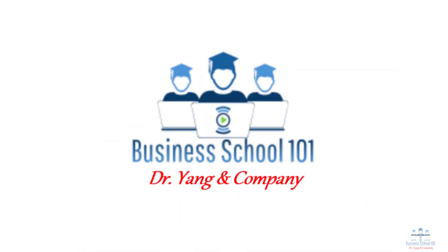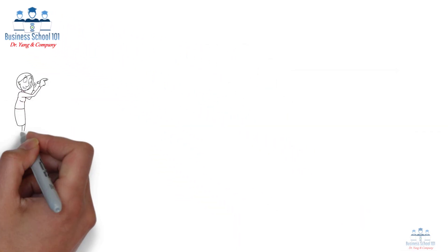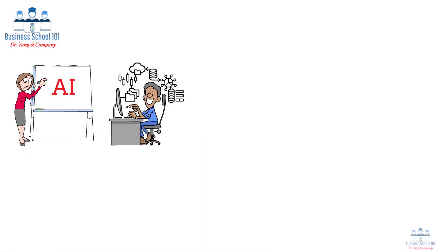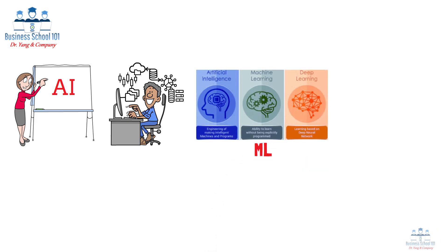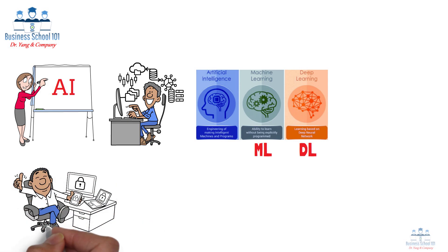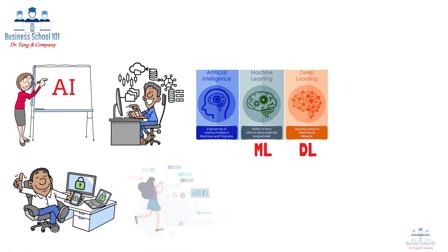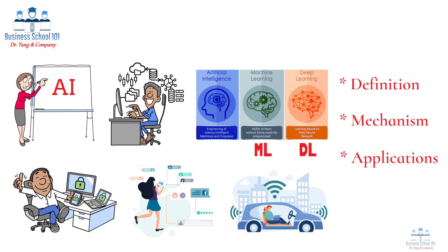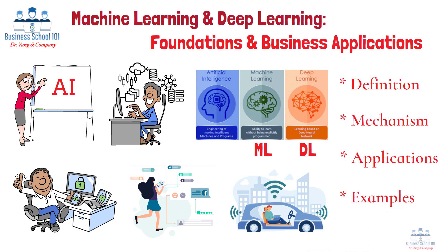Hello everyone, welcome to Business School 101. In today's video, we're diving into two of the most exciting and impactful technologies in the world of artificial intelligence: machine learning (ML) and deep learning (DL). These technologies power some of the most innovative business applications, from personalized recommendations to self-driving cars. But what exactly are ML and DL? How do they work, and how are they transforming businesses across industries? Are there some real-world examples? Let's explore these questions together.